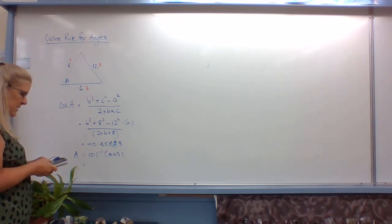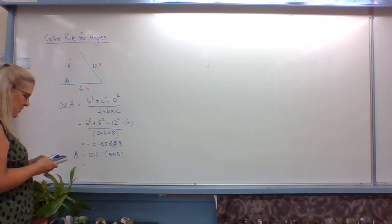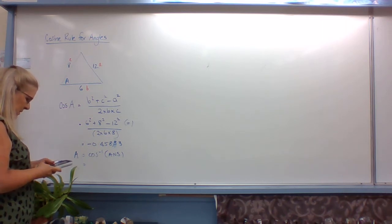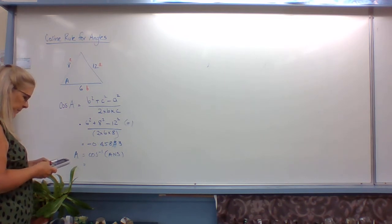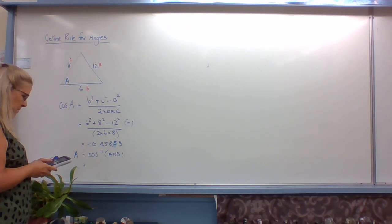So again, I'm having to set my calculator up to be in degrees. So shift cosine, shift answer equals, negative 0.45833.